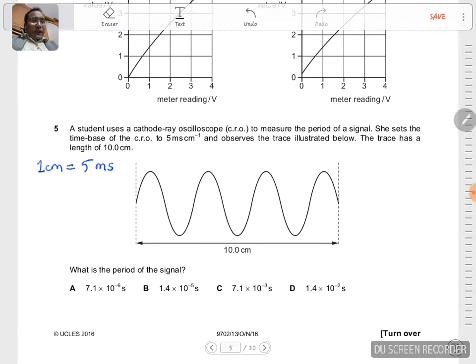The trace has a length of 10 centimeters as shown here. What is the time period of the signal? Here we have altogether 3.5 waves - from here to here is one wave, two waves, three waves, and then 0.5, so 3.5 waves.